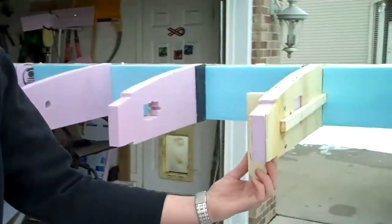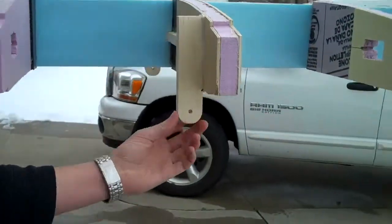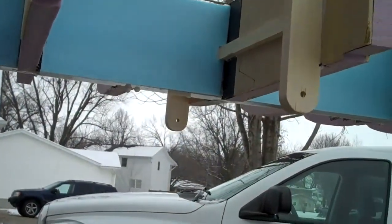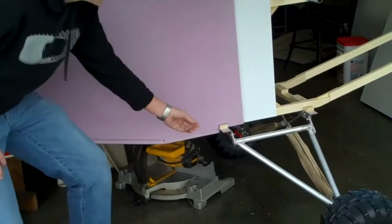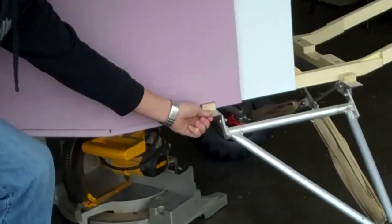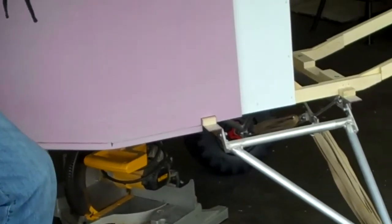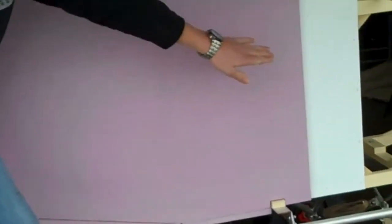Right here, this is where the strut will mount to. And then the struts are going to run from this point all the way down to this point on the landing gear. A nice solid base that is where the fuselage is all tied together.